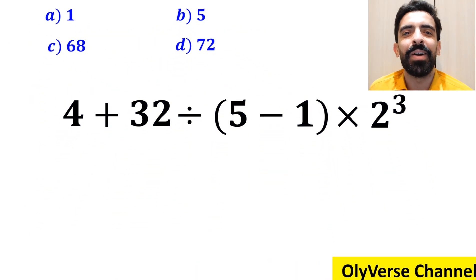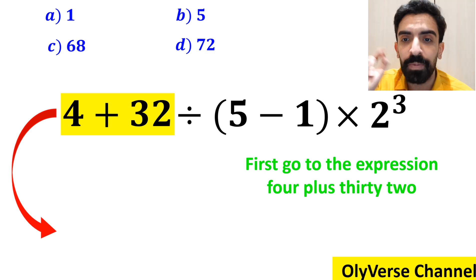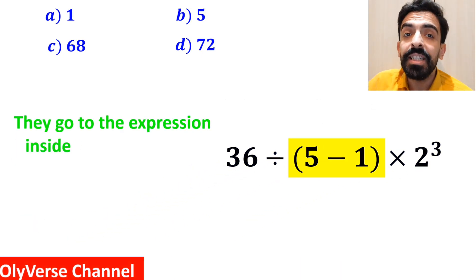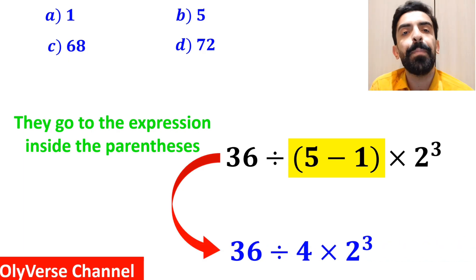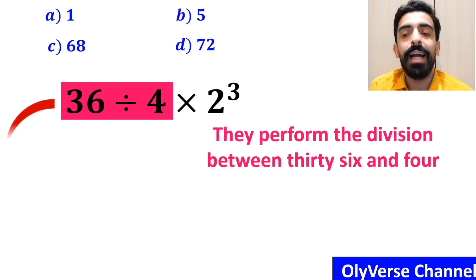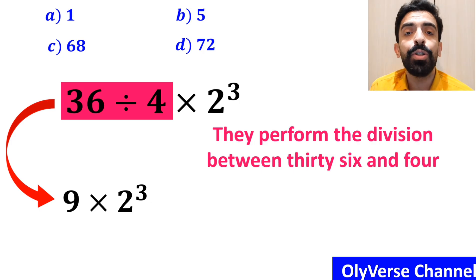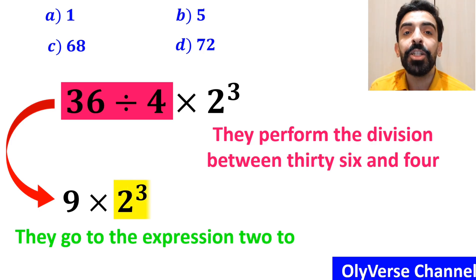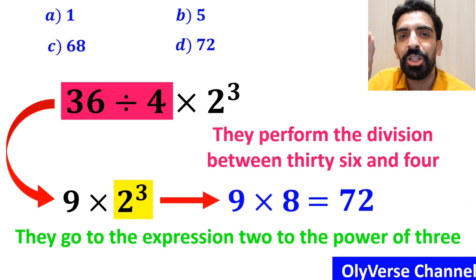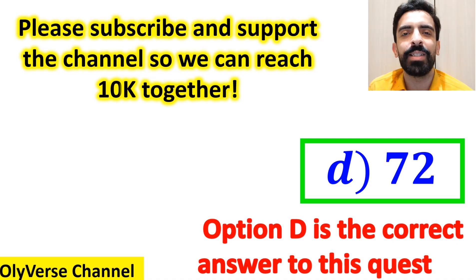Let's dive in and break it down step by step together. Many people when solving this question first go to the expression 4 plus 32 and instead write 36 divided by open parenthesis 5 minus 1 close parenthesis multiplied by 2 to the power of 3. Then they simplify inside the parenthesis to get 36 divided by 4 times 2 to the power of 3. They perform the division to get 9 times 2 to the power of 3, then simplify 2 to the power of 3 to get 9 multiplied by 8, giving the answer 72. Without hesitation, they say option D is the correct answer.